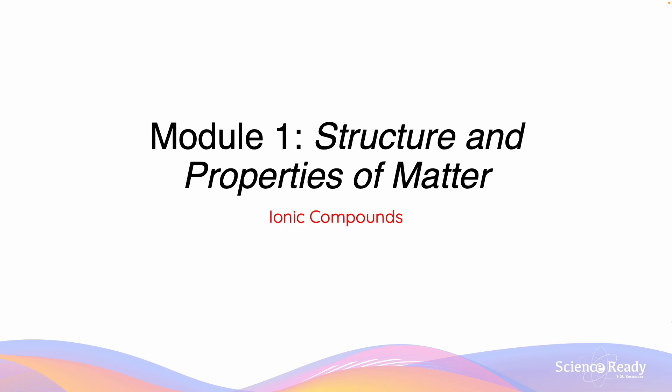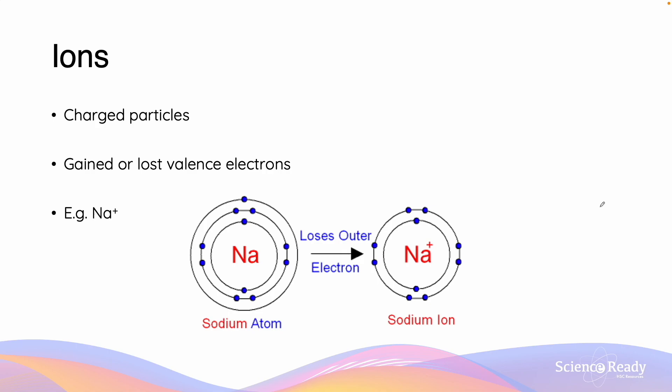Hi everyone, in this video we'll be talking about ionic compounds. We'll begin by exploring ionic compounds by first discussing what ions are. An ion is a name given to describe a charged particle, and that particle has the ability to become charged either through the gain or the loss of valence electrons.